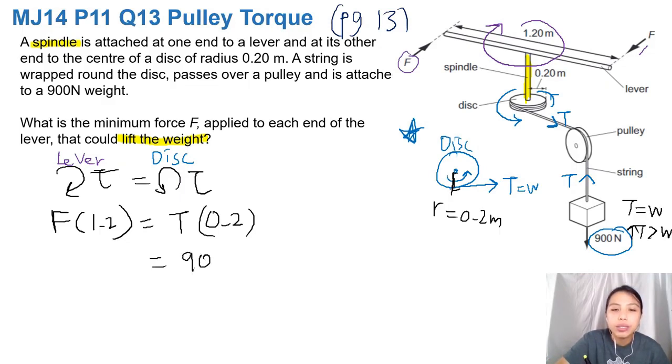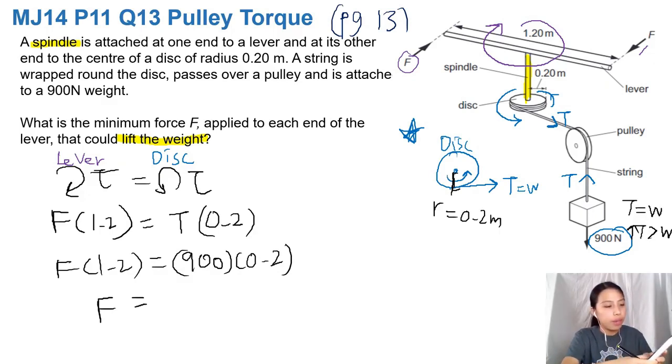Let's plug in 900 newtons there. And we have a force of 1.2. So use your calculator to find what the force is. You have 900 times 0.2 divided by 1.2. That's 150 newtons.